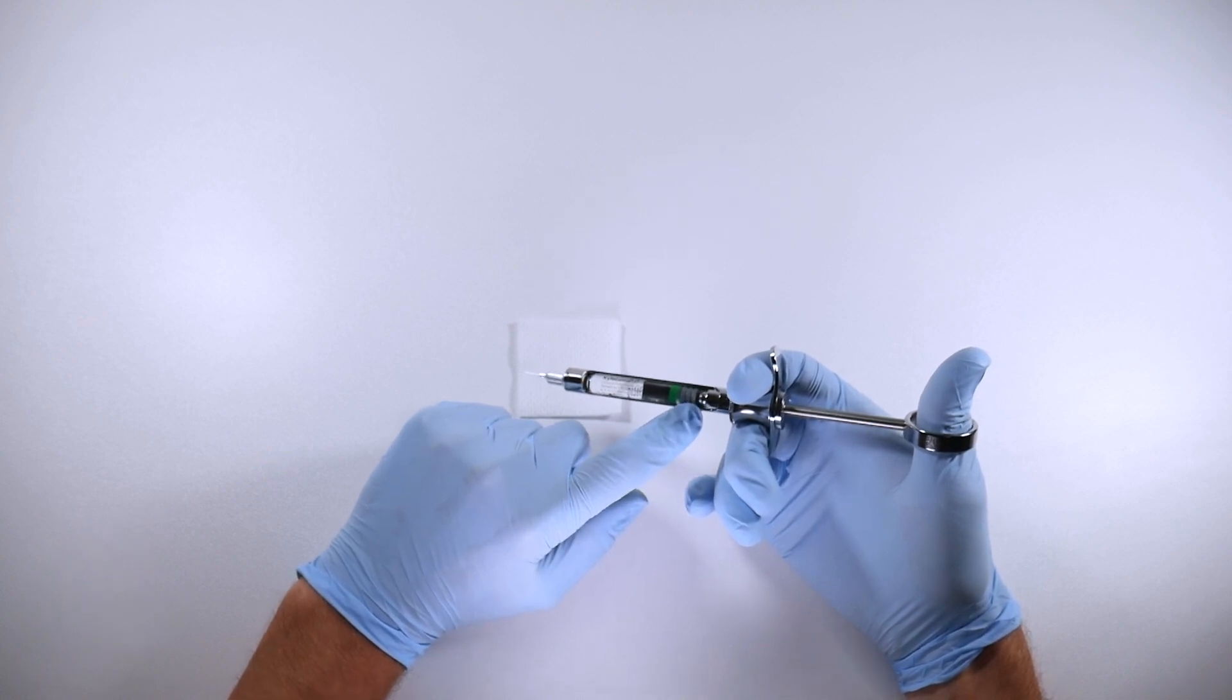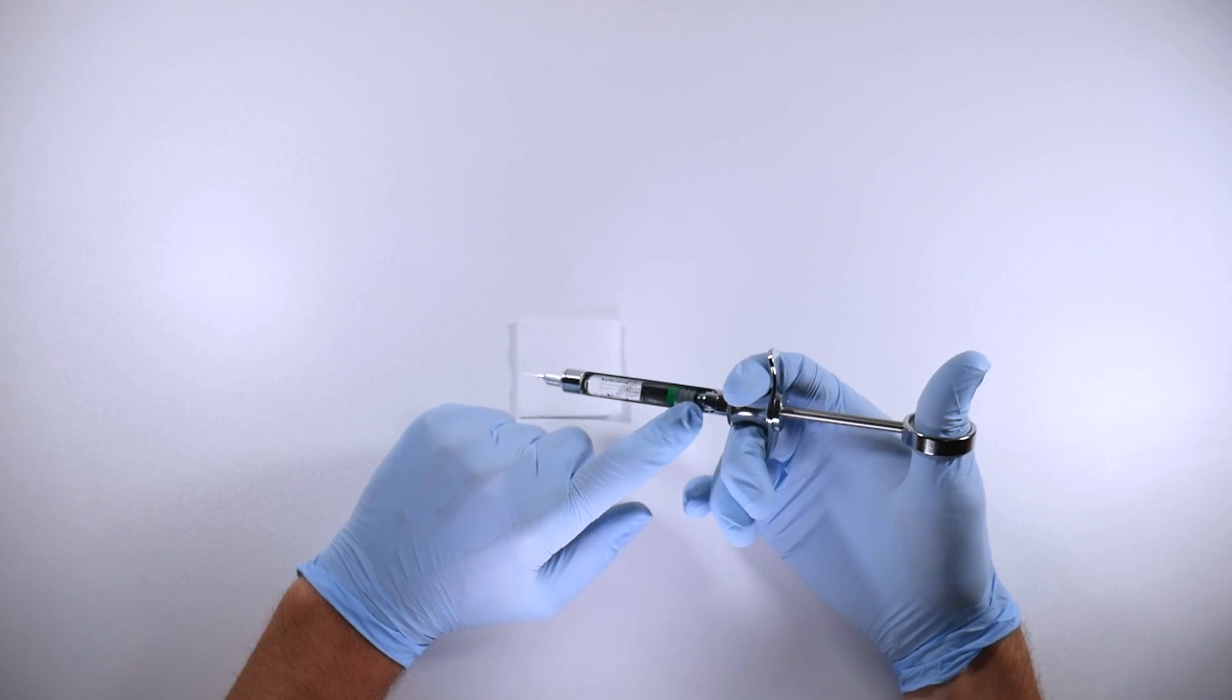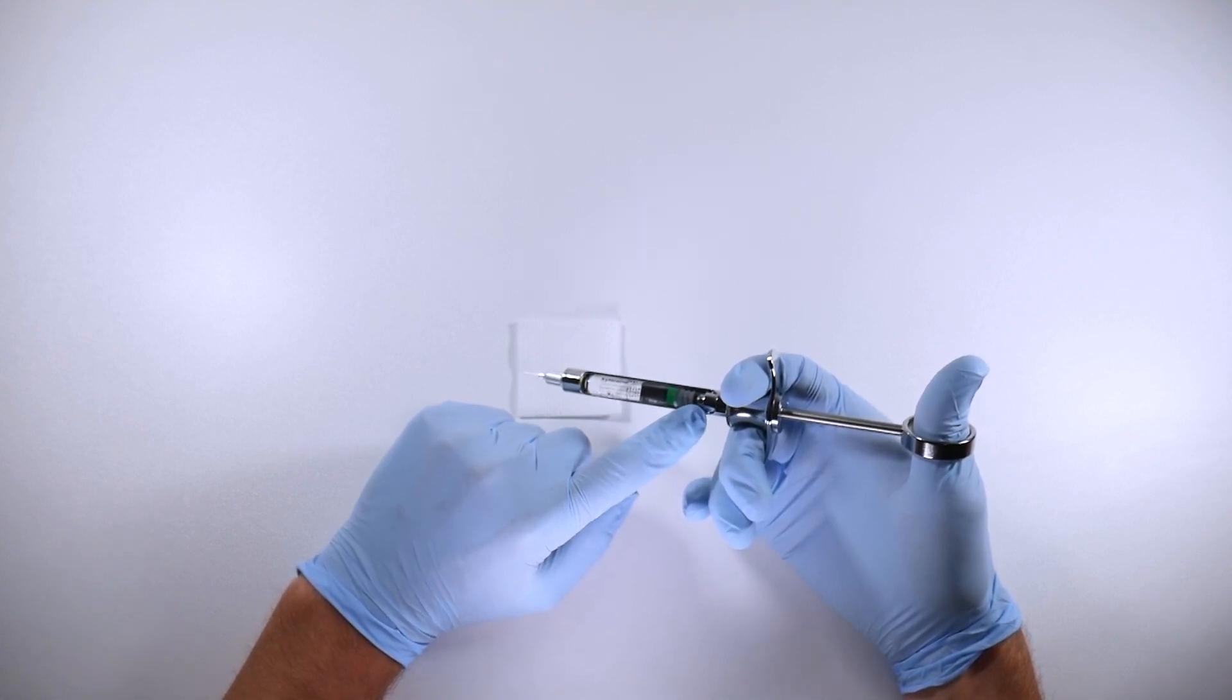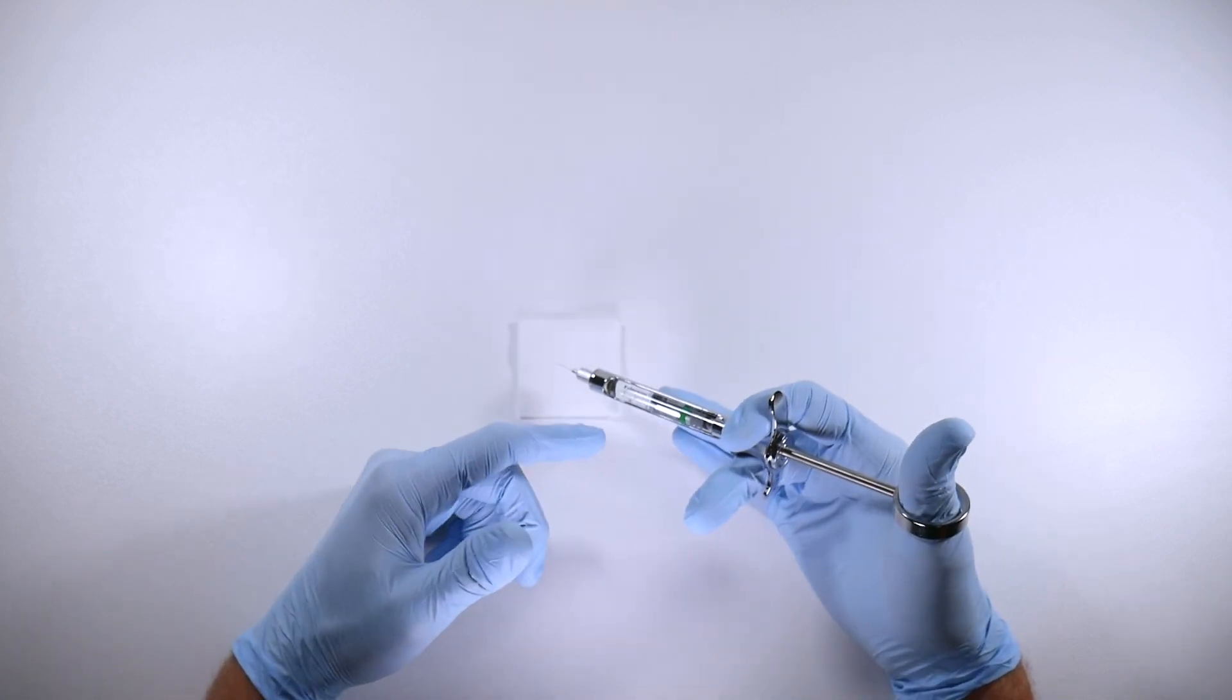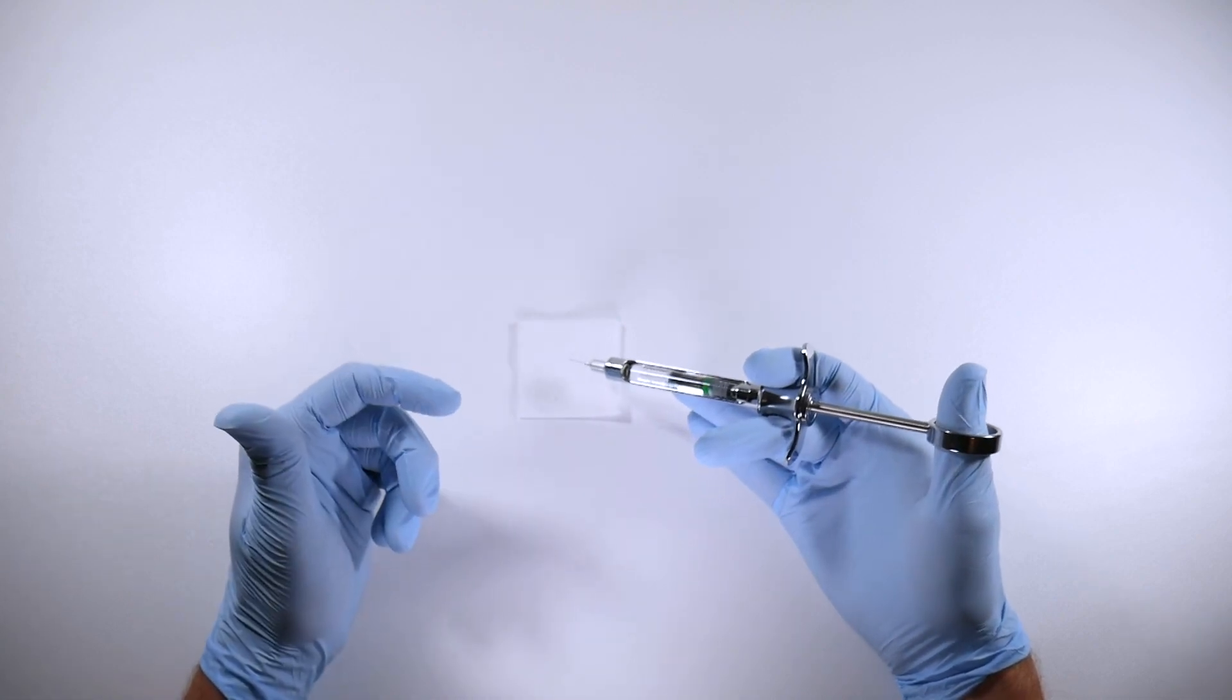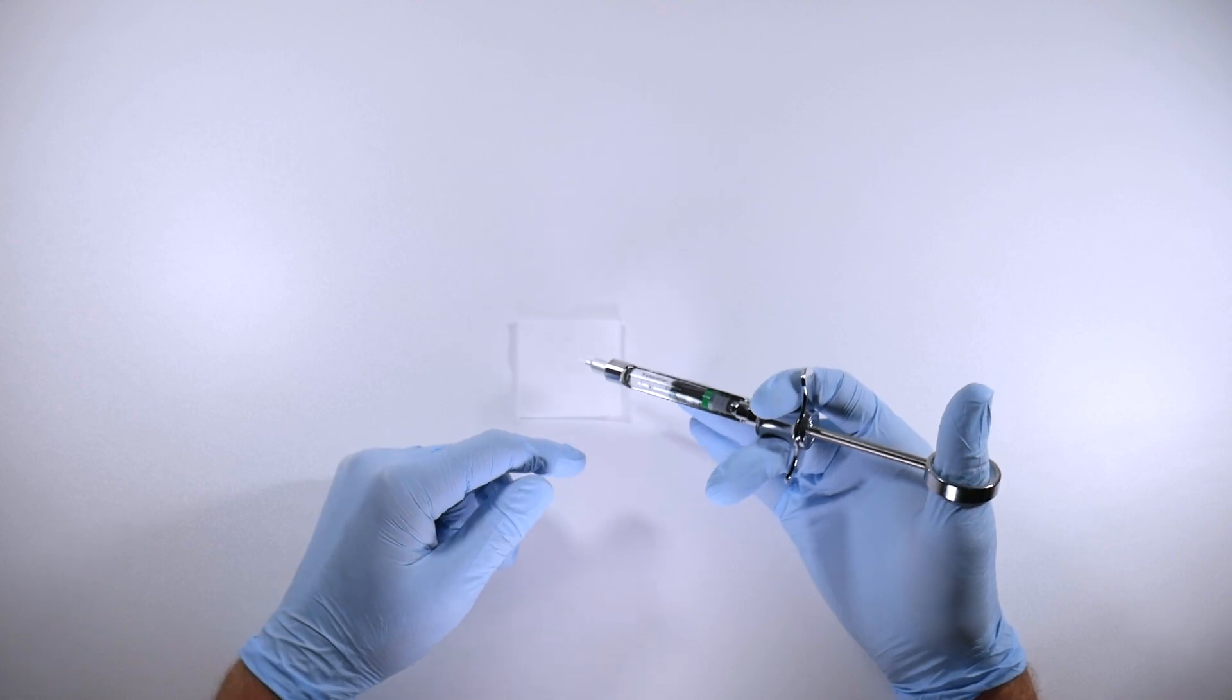you can do is you can sharpen it, and the other thing you could do is clean it if it's having trouble engaging that rubber stopper. Sometimes it just needs a good wipe, a bit of a clean up to make it function properly again. Alternatively, you could just invest in some different syringes. If you've done that many injections, it might be time to go with a new one. They're not that expensive. So what you do